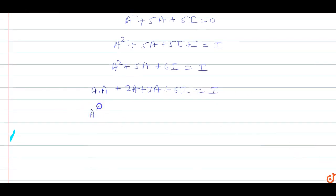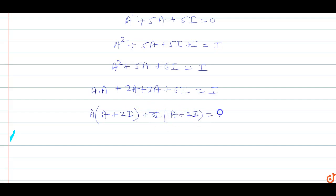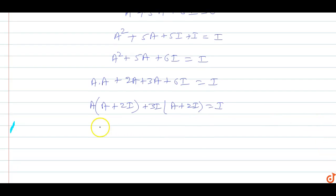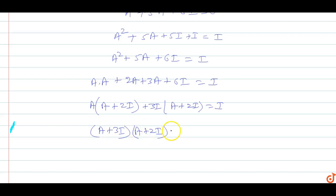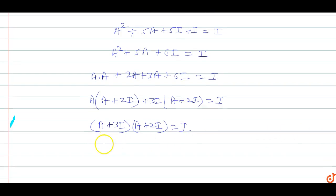Taking A common gives (A + 2I), and then taking 3I common gives (A + 2I). So we get (A + 3I)(A + 2I) = I.